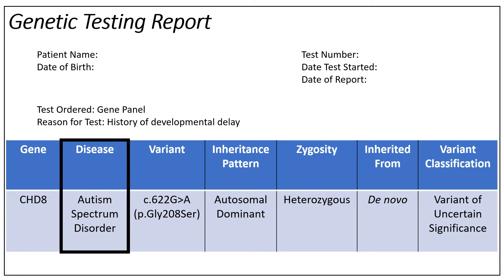The next section is about any disease that is associated with this specific gene. In this example, disease-causing or pathogenic variants in the CHD8 gene have been associated with autism spectrum disorder. It is important to remember that not all variants in a gene cause disease, and sometimes even individuals with disease-causing variants might not have the condition. For clarification about your specific variant and diagnosis, talk to your doctor or genetic counselor.